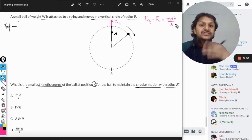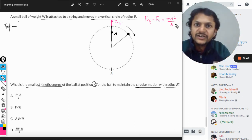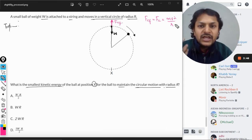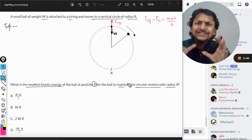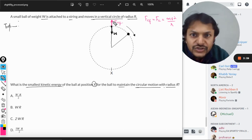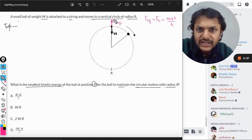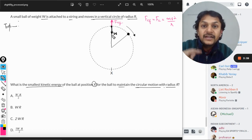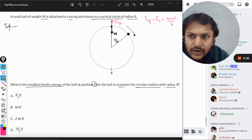Centripetal is towards the center, centrifugal is away from the center. In this case I'm considering centrifugal force rather than centripetal because it will be easier to understand. So centrifugal force is acting outside and the weight is acting inside. The resultant of these two will give rise to another force, the tension in the string.